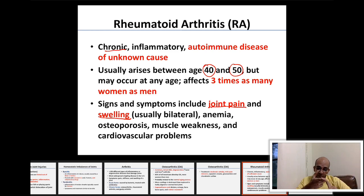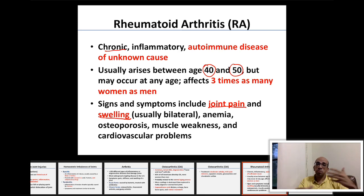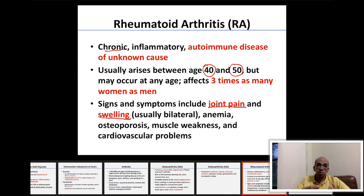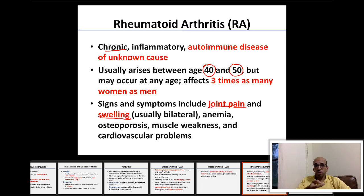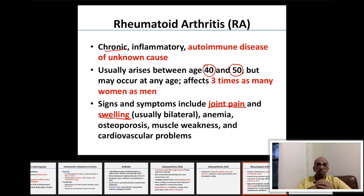Additionally, rheumatoid arthritis causes anemia, osteoporosis, muscle weakness, and cardiovascular problems. Multiple systems are affected because it is an autoimmune disease — the antibodies attack not only joints but also blood cells, bone cells, and cardiac muscle cells. Rheumatoid arthritis is a systemic disease affecting more than one organ system.